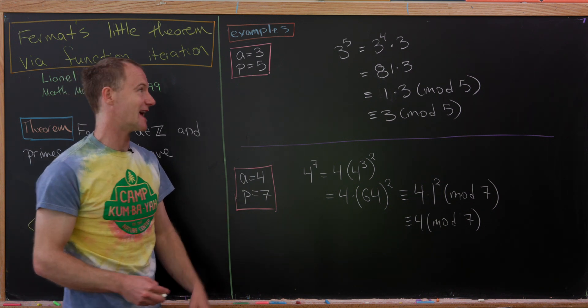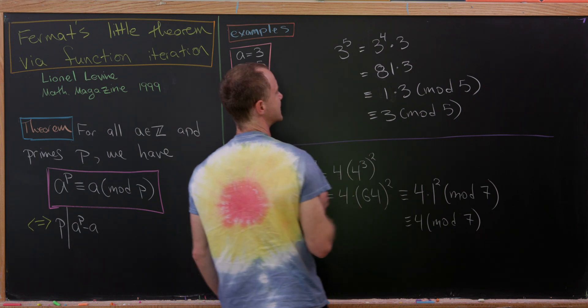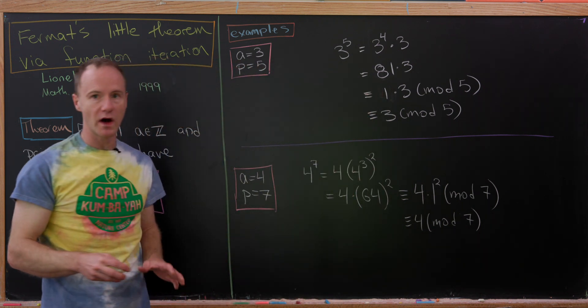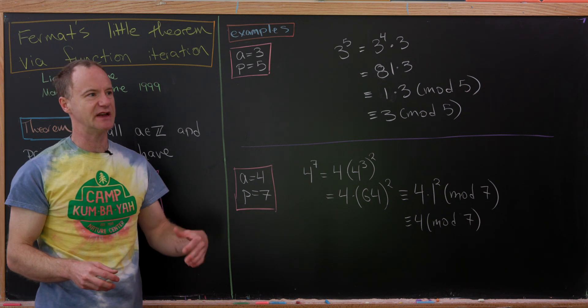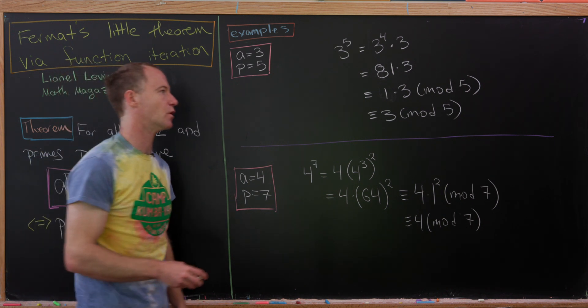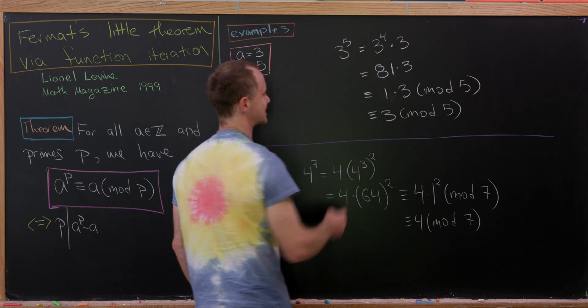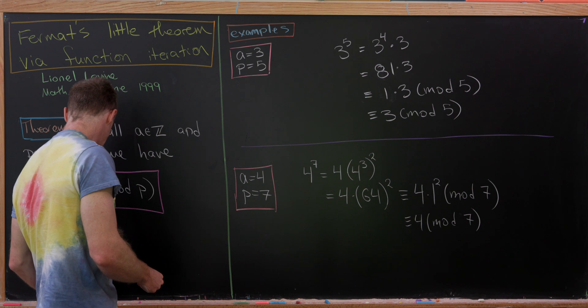So let's notice here we have 3 to the 5 can be decomposed as 3 to the 4 times 3. 3 to the 4th power is 81. So this is simply 81 times 3. But notice 81 is 1 more than a multiple of 5, meaning that 81 is congruent to 1 mod 5.